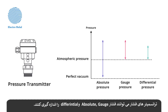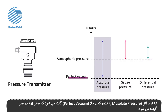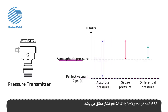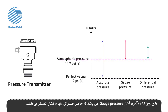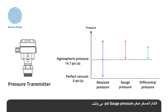Pressure transmitters can measure absolute, gauge, or differential pressures. Absolute pressure is referenced to a perfect vacuum, which is considered zero PSI. We express vacuum pressure as zero PSI absolute pressure. Atmospheric pressure is usually about 14.7 PSI absolute. The most common pressure measurement is gauge pressure, which is the total pressure minus the atmospheric pressure. Atmospheric pressure is zero PSI gauge pressure.